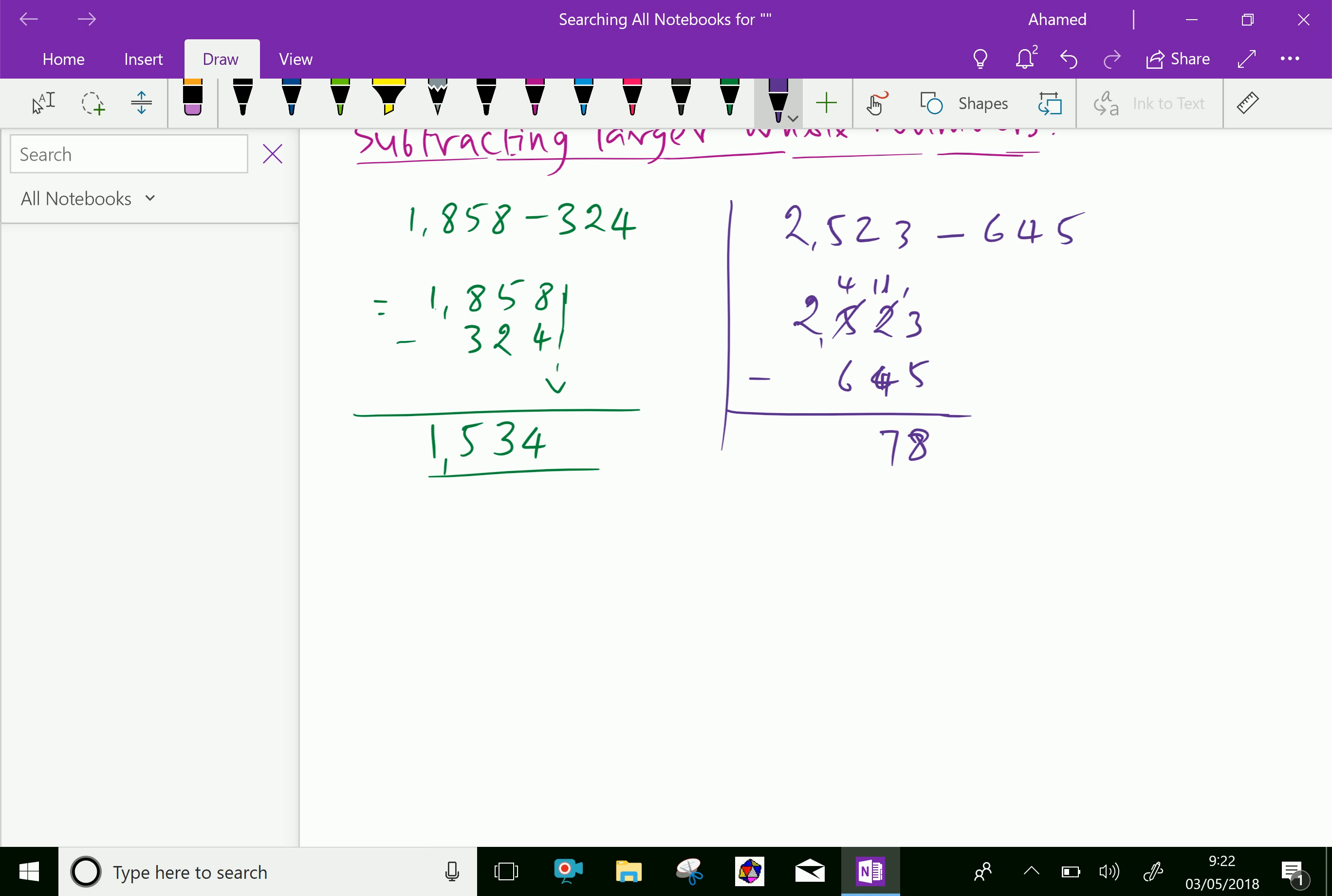Then here, the 2 is here, so nothing was borrowed from this 2. Bring down the 2 as it is, and there's no subtraction in the second number. Now we have this 4 here.